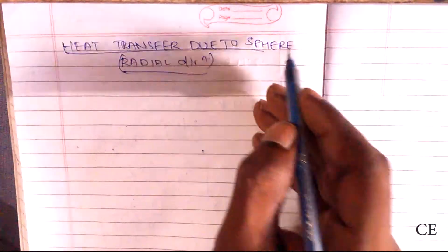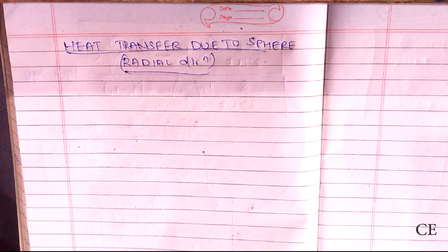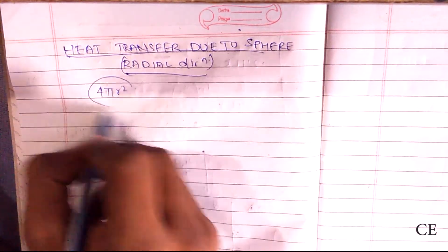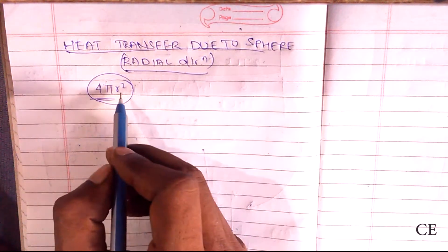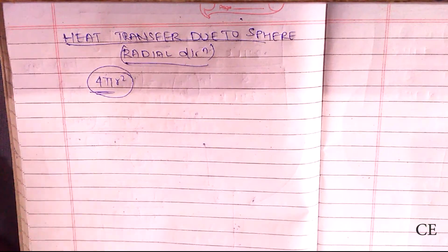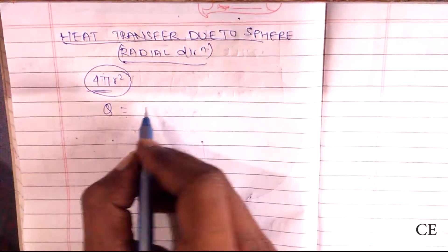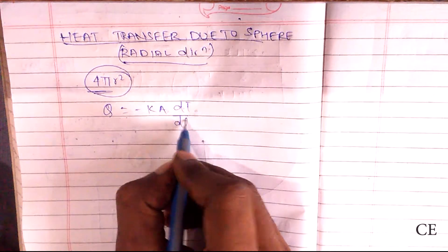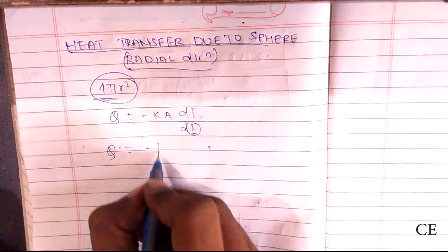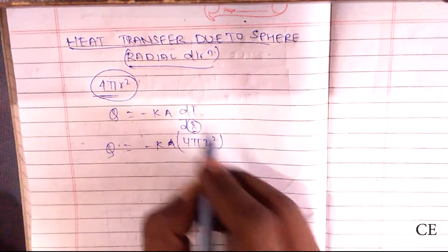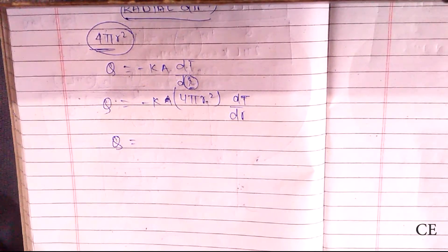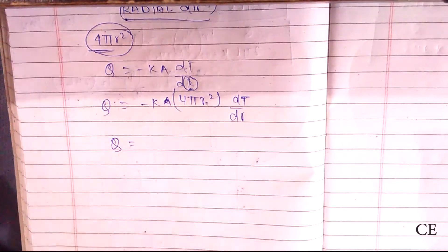Now finding heat transfer through a solid sphere. The procedure is the same as for a cylinder, but the area is 4πR². Starting from Fourier's law: Q equals negative K times 4πR² times dT/dR. Rearranging and integrating gives the formula for Q.